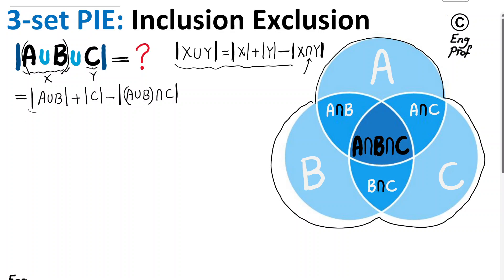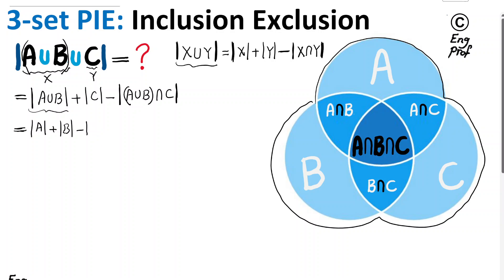Now let's further expand. This is another instance of the 2-set principle of inclusion-exclusion, so we can apply it again. The cardinality of A union B expands to: cardinality of A plus cardinality of B minus cardinality of A intersect B. That substitution handles the first component, and of course we keep the second component — cardinality of set C.